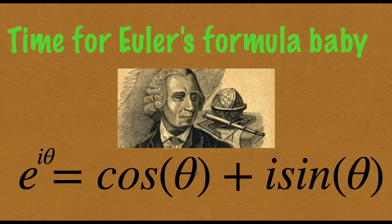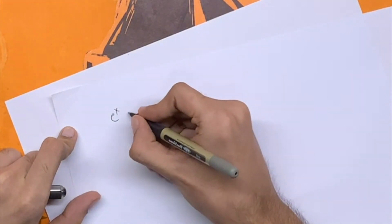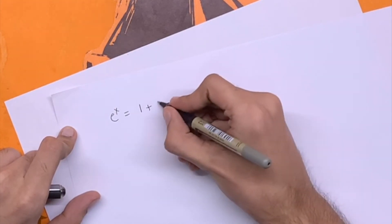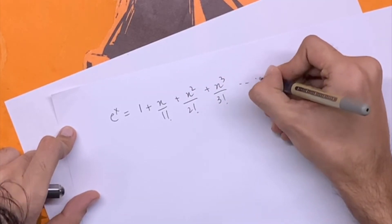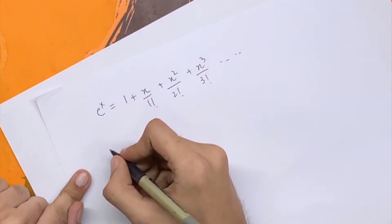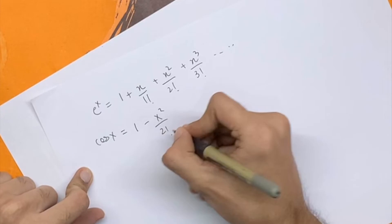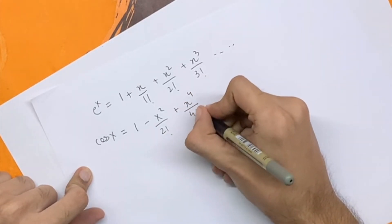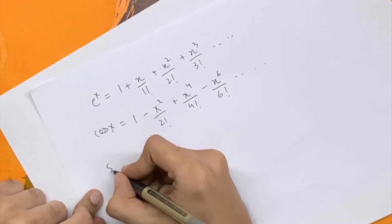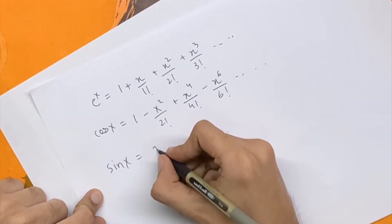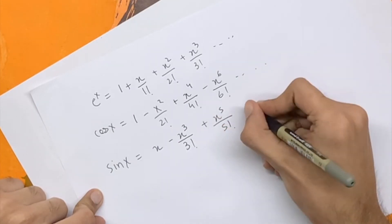Now let's talk about Euler's formula. We'll use the Taylor series expansion for e to the power x, which is 1 plus x over 1 factorial plus x squared over 2 factorial plus x cubed over 3 factorial, and so on. We'll also use the Taylor expansion for cos x — which is 1 minus x squared over 2 factorial plus x to the 4 over 4 factorial minus x to the 6 over 6 factorial — and for sin x, which is x minus x cubed over 3 factorial plus x to the 5 over 5 factorial, and so on.